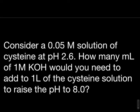Consider a solution of 0.05 molar cysteine at pH 2.6. How many milliliters of 1 molar KOH would you need to add to 1 liter of the cysteine solution to raise the pH to 8.0?